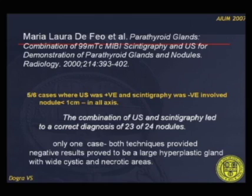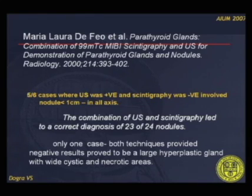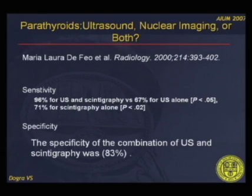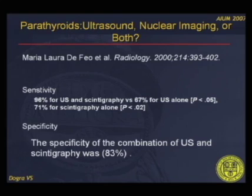That study had 5 of 6 cases where ultrasound was positive and scintigraphy was negative, involving nodules less than 1 cm in size. One case was negative on both techniques, secondary to a large hyperplastic gland with cystic and necrotic areas. Overall sensitivity combining ultrasound and scintigraphy was 96%, versus 67% for ultrasound alone and 71% for scintigraphy alone. Combined specificity was 83%.